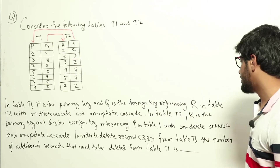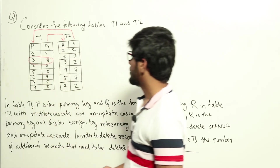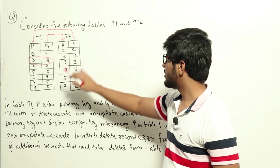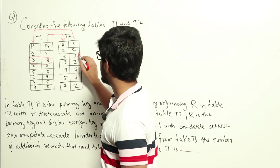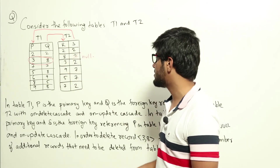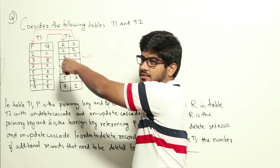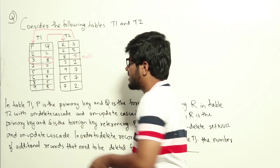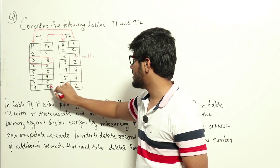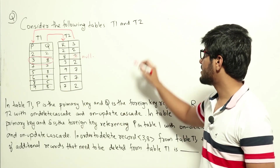With this information, let us look at the question. We are deleting record (3,8) from table T1. The S column in T2 is referencing P=3, and the constraint is ON DELETE SET NULL, meaning we just set that value to null — nothing more is deleted from T2. Looking at the row, R value is 8, and there are more rows referencing 8, but we are only setting the S value to null, not deleting. If it were ON DELETE CASCADE, we would have had to delete that row and cascade further, but since it is ON DELETE SET NULL, we just set it null. Therefore, no additional records need to be deleted from T1, and the answer is 0.